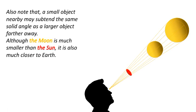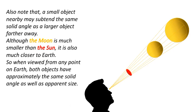Although the moon is much smaller than the sun, it is also much closer to earth. So when viewed from any point on earth, both objects have approximately the same solid angle as well as apparent size. This is evident during a solar eclipse.